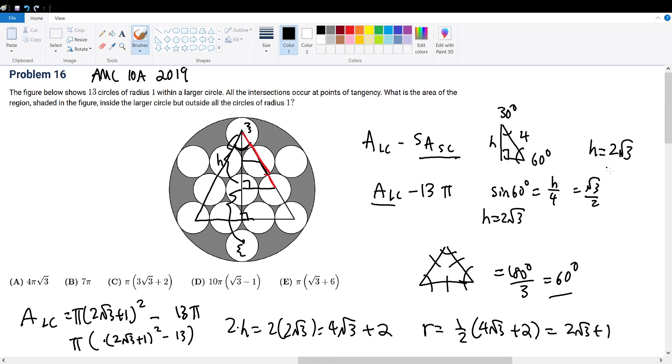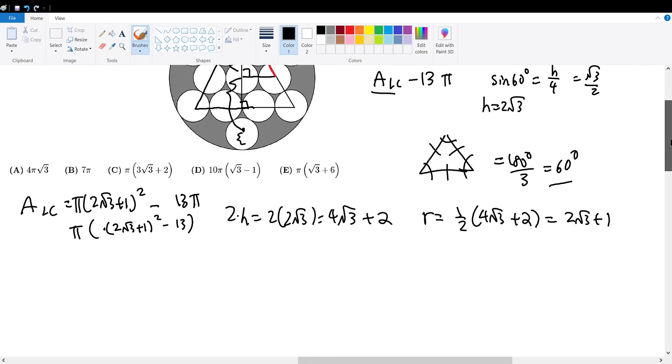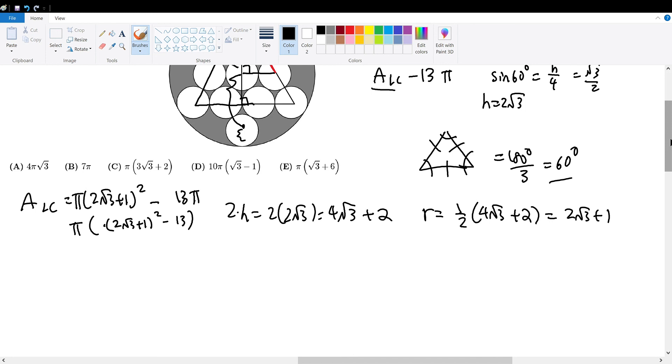I'm going to need a little bit more room here. So this will now be equal to pi times 4 times 3, which is 12, plus 4 root 3 plus 1 minus 13, which is the same thing as pi times 4 root 3, because 12 plus 1 minus 13 cancel each other out. So our final solution will be 4 pi times root 3, which brings us to answer choice A.